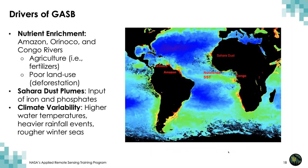What are the drivers of the Great Atlantic Sargassum Belt? First, riverine sources of nutrients include large runoff from the Amazon, Orinoco, and Congo rivers, including fertilizers used in agriculture. Second, wet deposition of Saharan dust plumes during rains provides input of iron and phosphates into the Atlantic Ocean. Upwelling from the coast of Africa could also be important. Climate variables such as higher sea surface temperatures and heavier rainfall events can also be contributing factors.